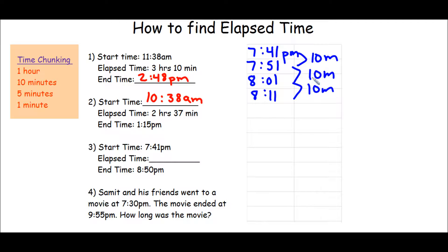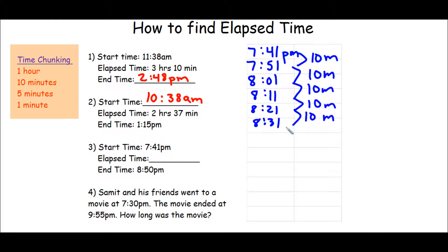Keep adding 10 minutes until you can't add 10 minutes anymore. This will give me 8:21 — connect, 10 minutes. Then 8:31 — another chunk of 10 minutes. Then 8:41 — another chunk of 10 minutes. And now I can't add 10 more minutes because if I do, I'll end up at 8:51. I want to end up at 8:50.